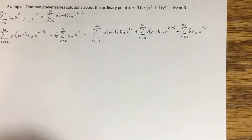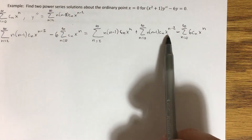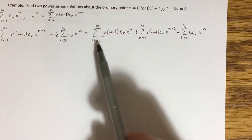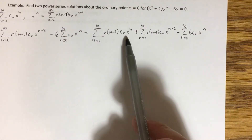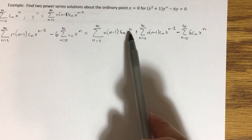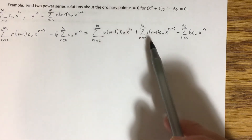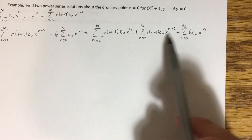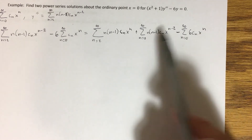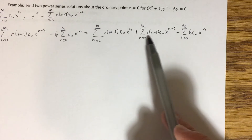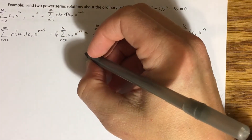Now we have three summations to combine. The process is the same as before — we need two things: all the x terms to start in the same place, and all the indices to start in the same place. Let's think about what the first term in each series is. Plugging n=2 into the first series gives an x² term. Plugging n=2 into the second series gives an x to the 0 term. And the third series also starts with an x to the 0 term since it starts at n=0.